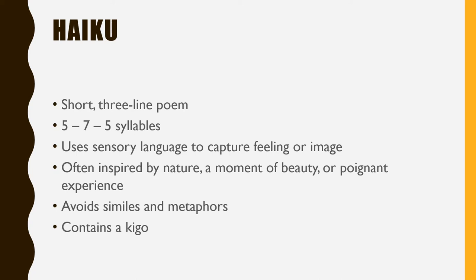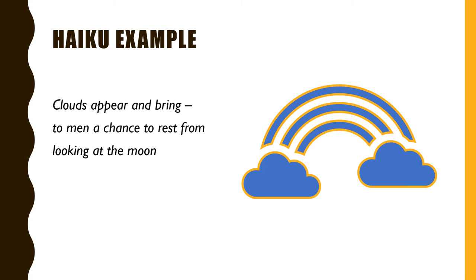Let's look at an example: 'Clouds appear and bring to men a chance to rest from looking at the moon.' The kigo in this haiku is the word 'clouds.' The clouds indicate a rainy season. As you can see, the structure of this haiku follows the 5-7-5 syllable rule. You do not yet have to write your own haiku, but instead try to think of what this short poem could mean. Keep in mind that a haiku is not supposed to be very difficult to understand.